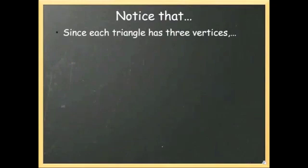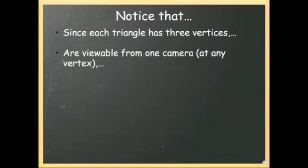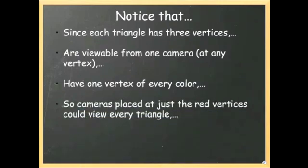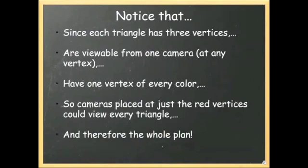Now there's some things we should take notice of at this point. Each triangle has three vertices. We saw earlier that it just takes a single camera at any vertex to view a triangle. Also, each triangle has one vertex of every color. So for example, we could place our cameras at just the red vertices and view every triangle since every triangle has a red vertex. And if we're viewing every triangle, we're also viewing the entire floor plan. This works for the yellow and blue vertices also.